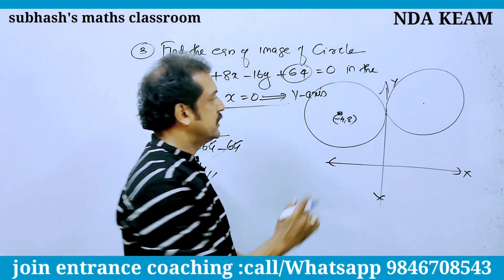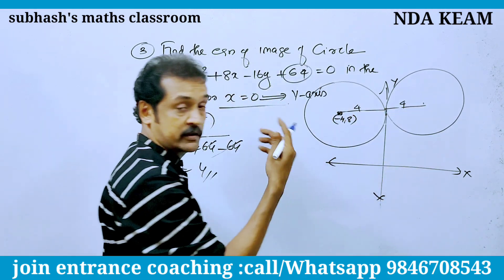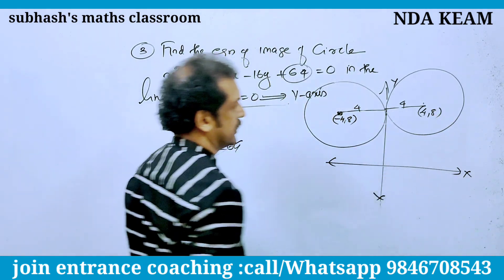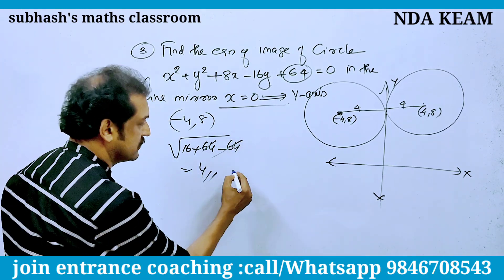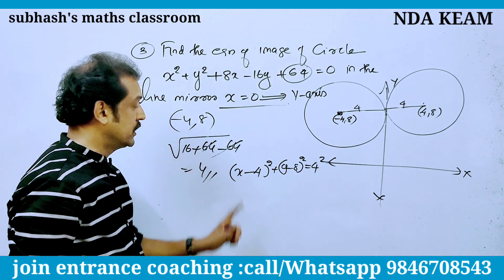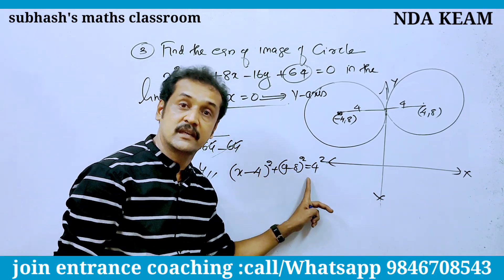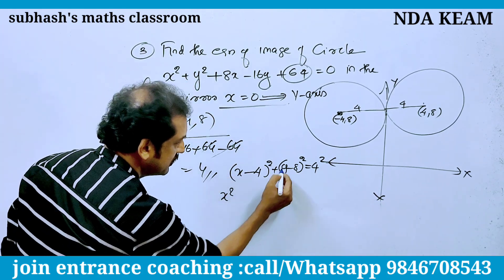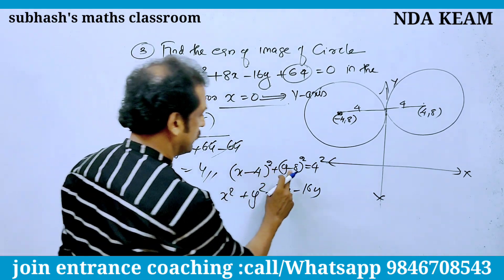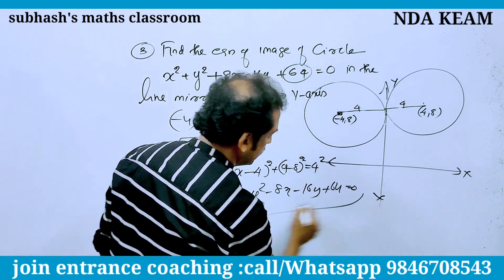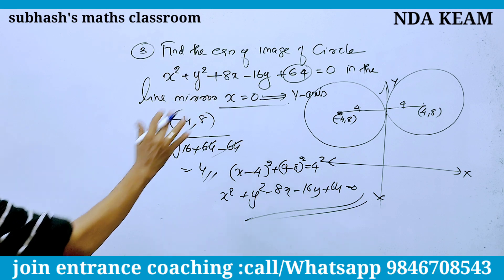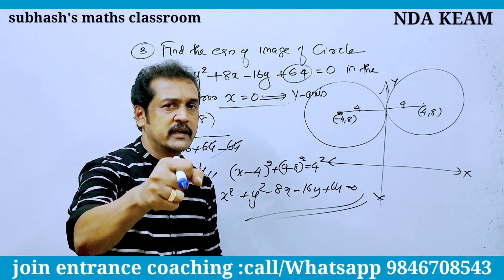In this circle, the center is at (4, 8). The equation of the image is: (x − 4)² + (y − 8)² = 4². Expanding: x² + y² − 8x − 16y + 64 = 0. Then simplifying with 4² and 8² terms.